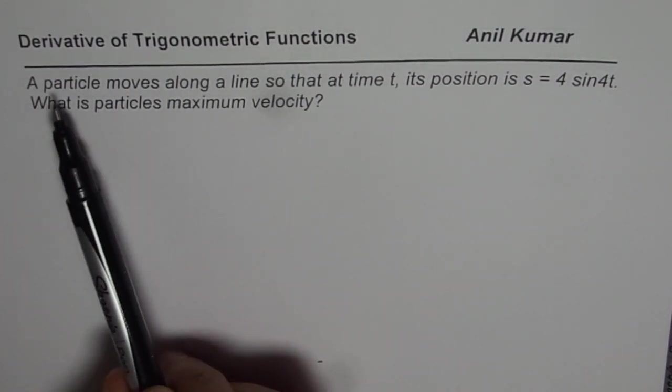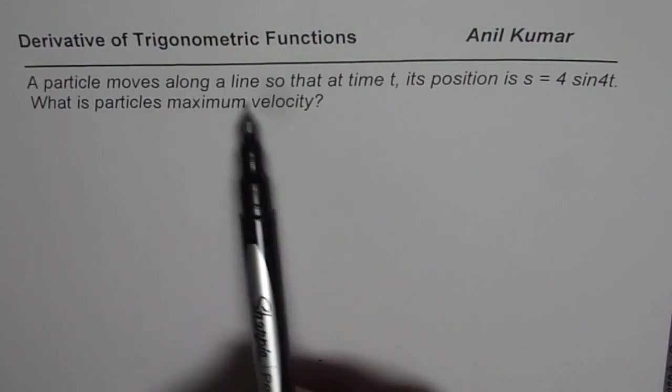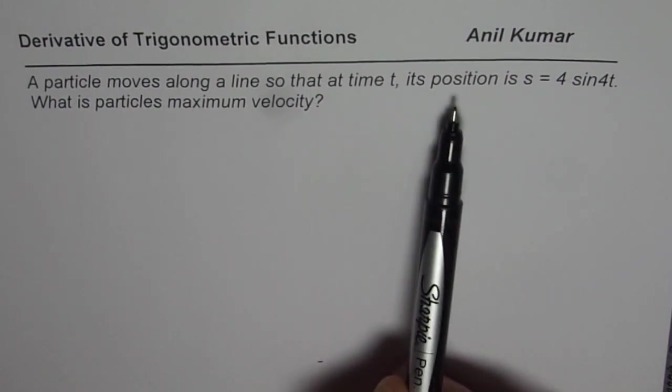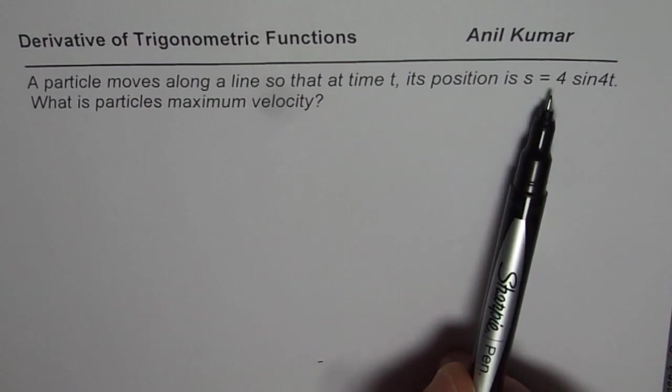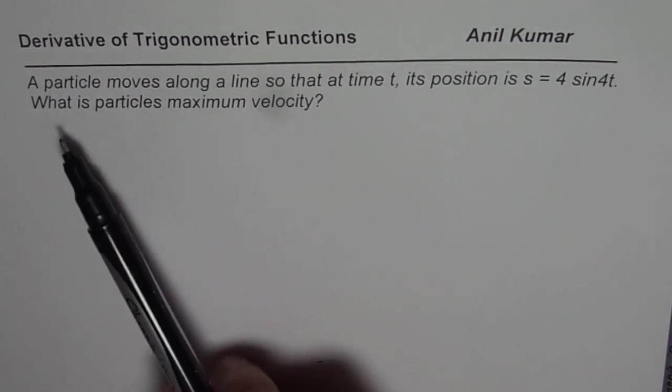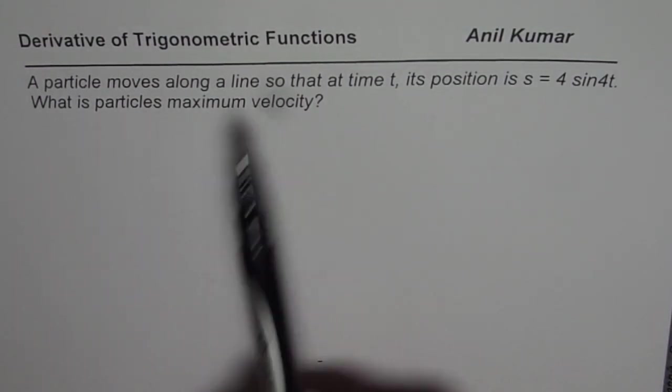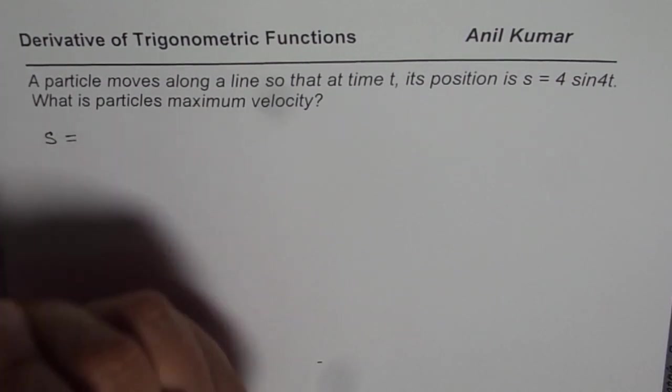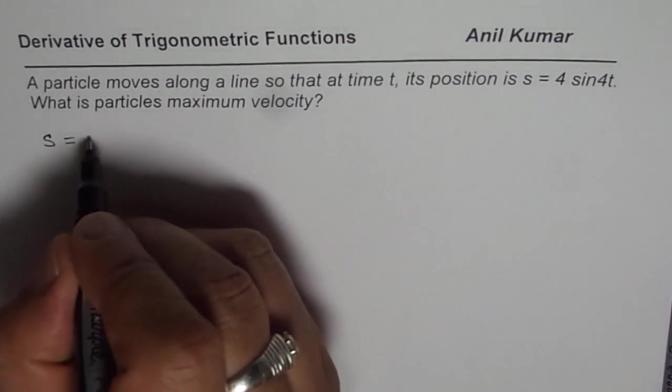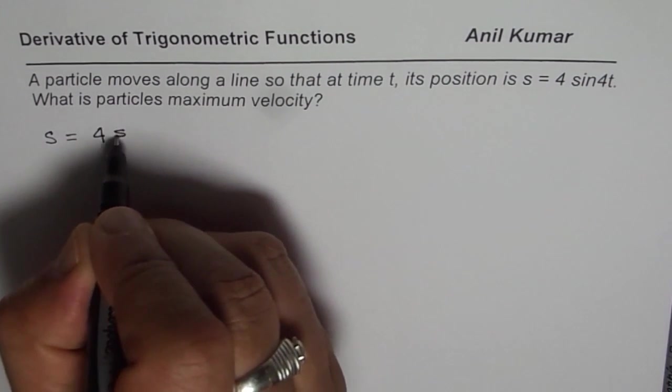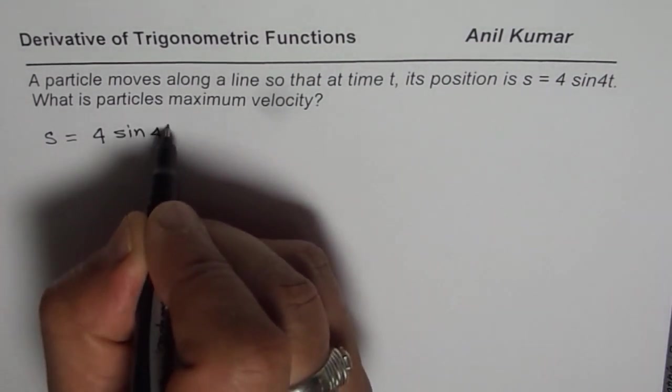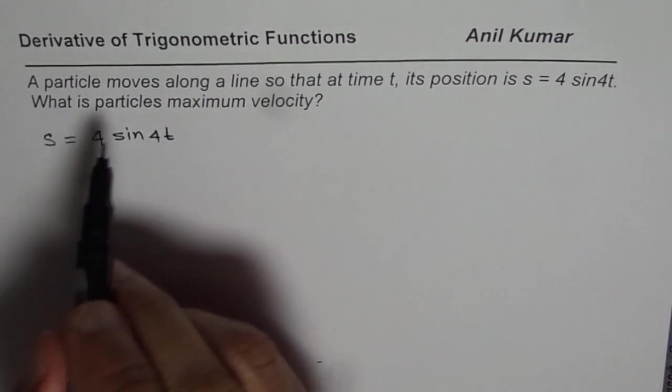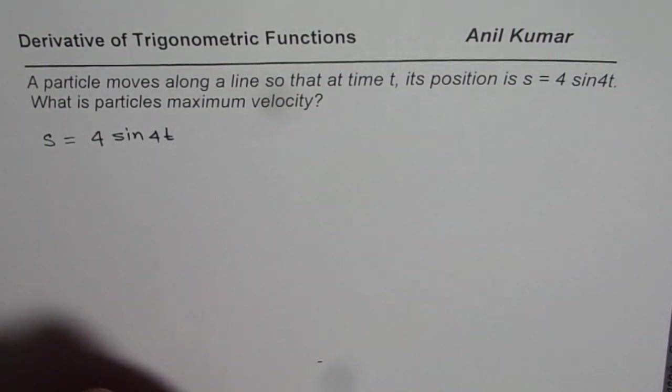The question is: a particle moves along a line so that at time t its position is s equals 4 sin 4t. What is the particle's maximum velocity? So let me write down the equation. Displacement s is our position, equals 4 sin 4t. We need to find the particle's maximum velocity.